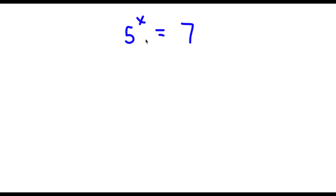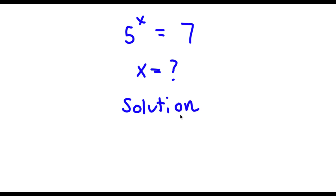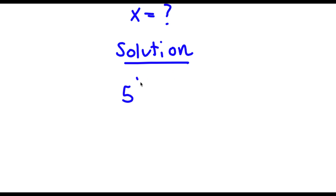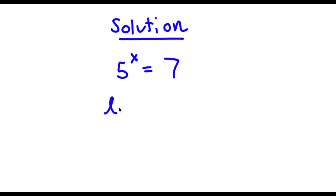Alright, so I have 5 to the power of x is equal to 7. Now I want to find the value of x. So for my solution, I'll first start with 5 to the power of x is equal to 7. Now I'm going to take the log on both sides. So now I have log of 5 to the power of x is equal to log 7.